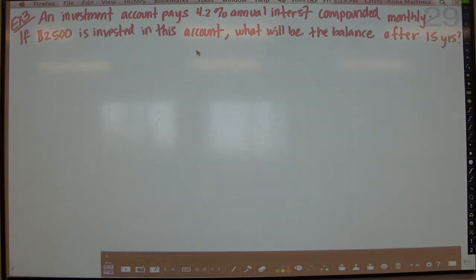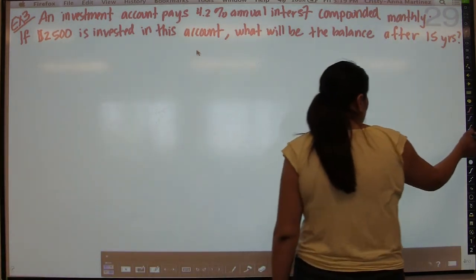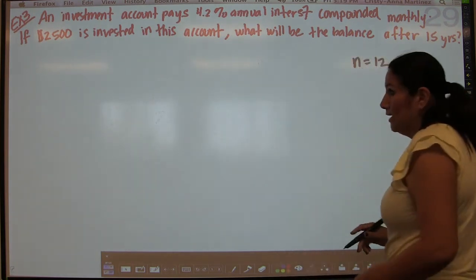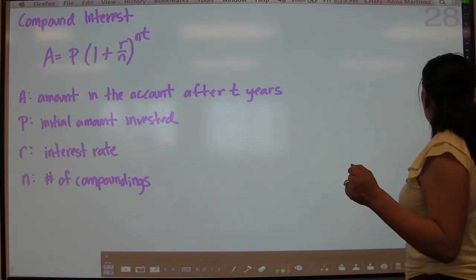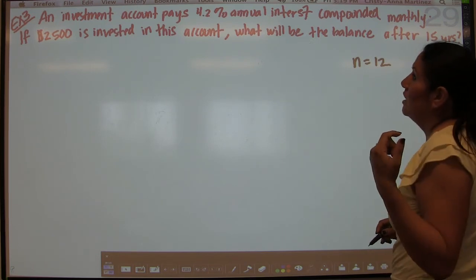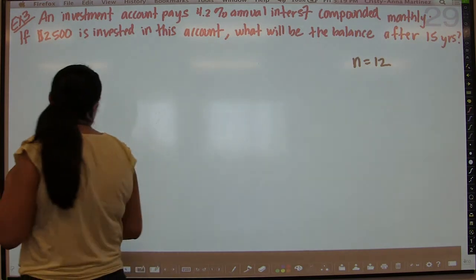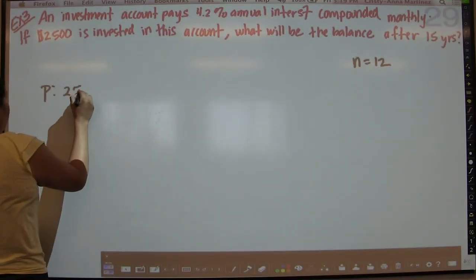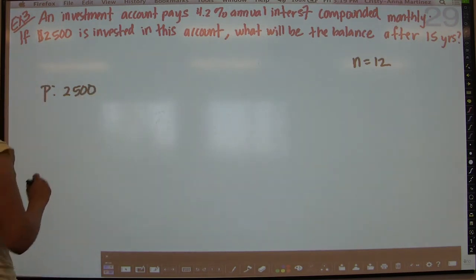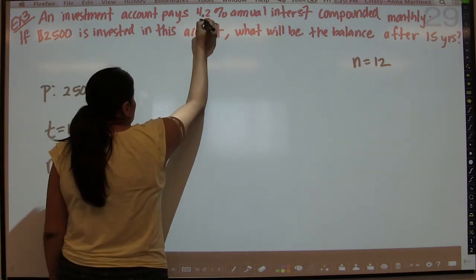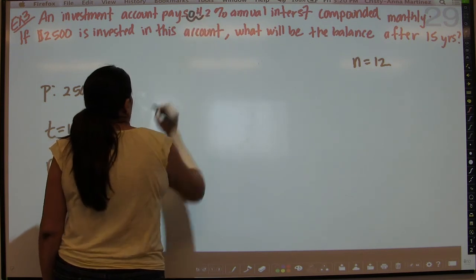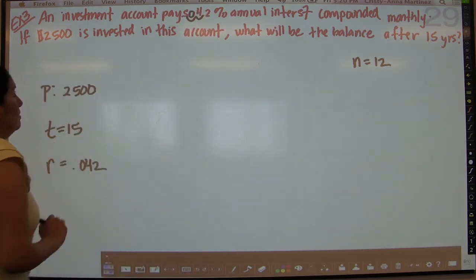It says an investment account pays 4.2% annual interest, compounded monthly. Compounded monthly means that N is going to equal 12, the number of months in a year, because that's what compounding is there. It says the number of compoundings per year. Let's see what else it says. If $2,500 is invested in this account, so the initial amount invested is $2,500. What will we have after 15 years? So T is 15 years. And so the only thing that we're missing here is our R. And R is 4.2%, but you want to use that as a decimal, so .042 as opposed to a percent.